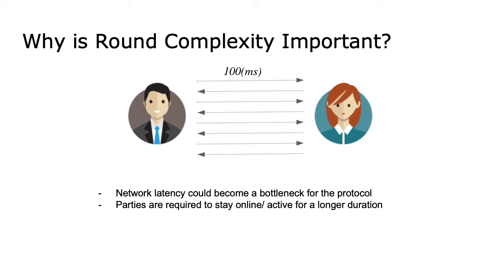Why is round complexity important? If the parties have a very long distance between them or the network link is very slow, then if the round complexity of the protocol is high, the network latency itself could become the bottleneck. This also means that the parties may have to stay online for a longer duration.